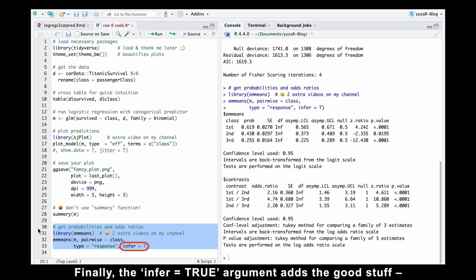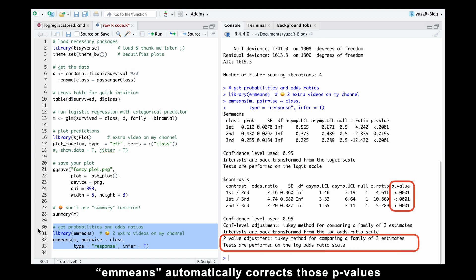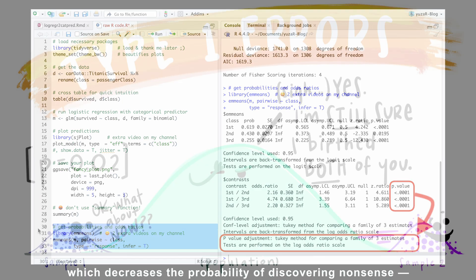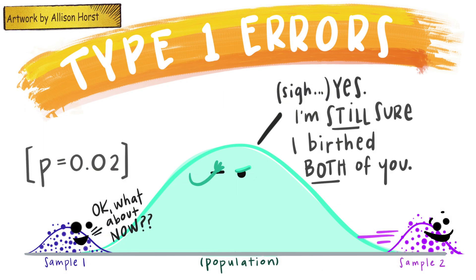Finally, the infer equals true argument adds the good stuff: 95% confidence intervals for the odds ratios and p-values for the probabilities. But that's not all. Emmeans automatically corrects those p-values for multiple comparisons using the Tukey method, which decreases the probability of discovering nonsense, also known as type 1 error.